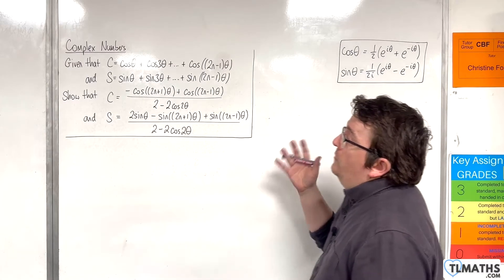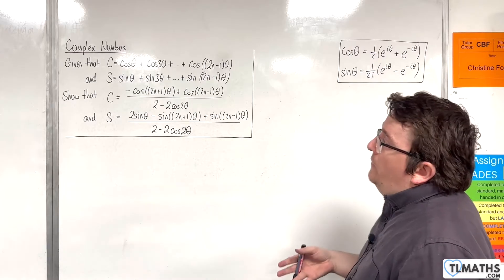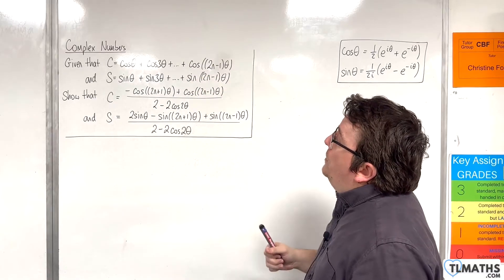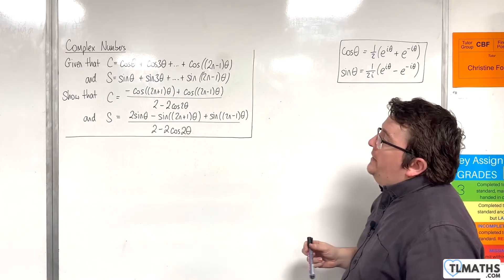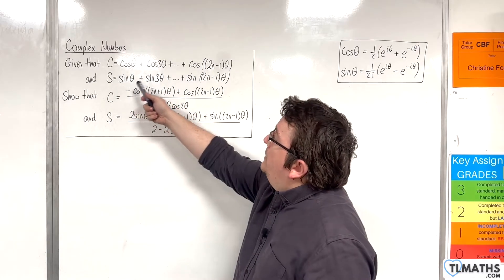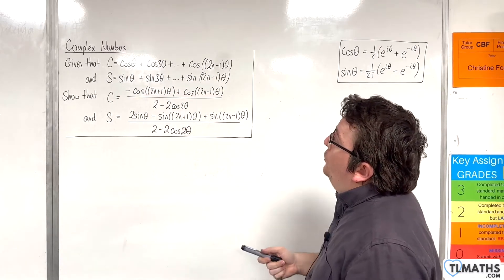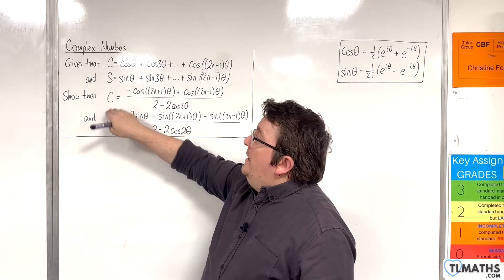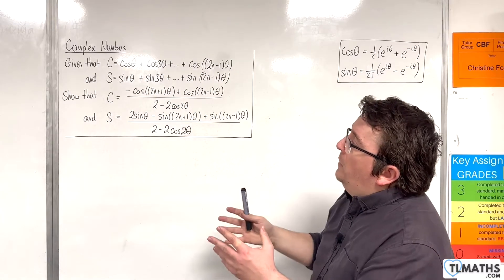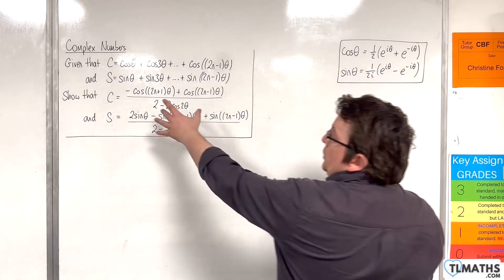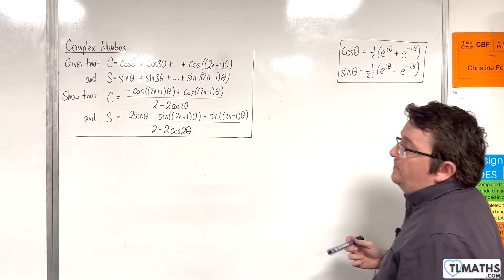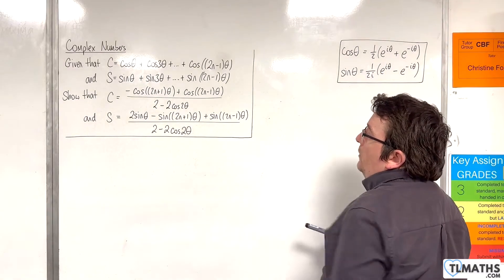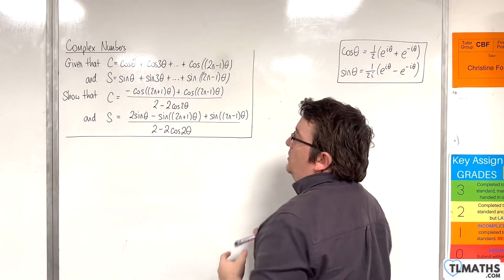In this video we are given that C is cosine θ plus cosine 3θ plus etc. up to cosine of (2n−1)θ, and S is sine θ plus sine 3θ plus etc. up to sine of (2n−1)θ. We need to show that C equals (−cos(2n+1)θ + cos(2n−1)θ) / (2 − 2cos2θ), and S equals (2sinθ − sin(2n+1)θ + sin(2n−1)θ) / (2 − 2cos2θ).